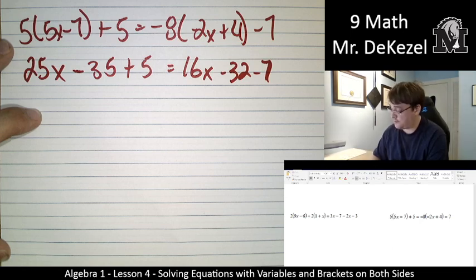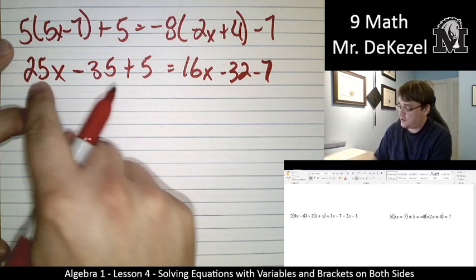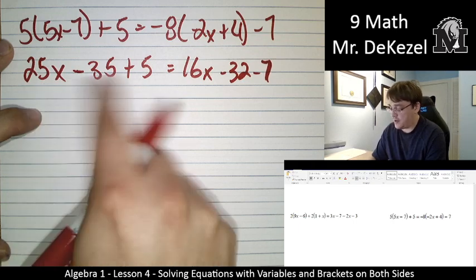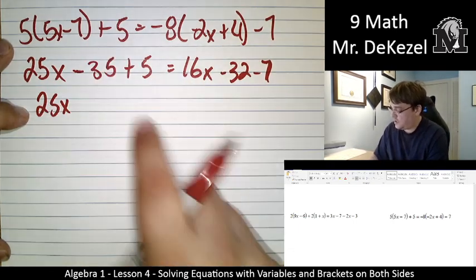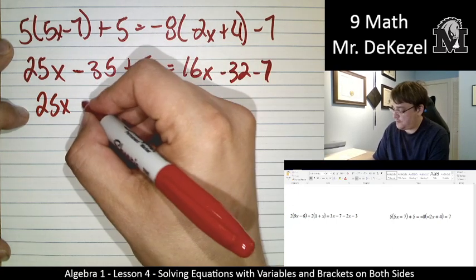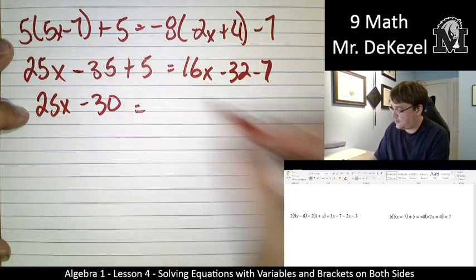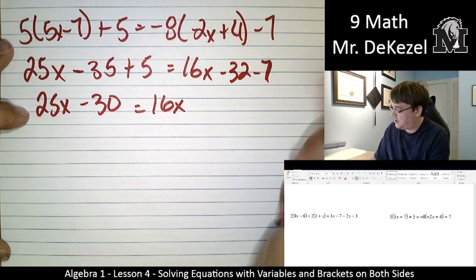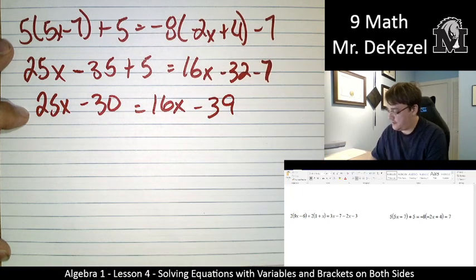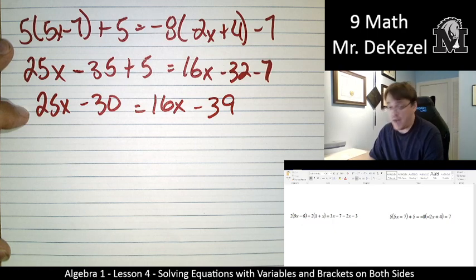So let's combine like terms on both sides. 25 doesn't combine with anything on this side, so it's just 25x. Minus 35 plus 5, that's minus 30, is equal to 16x stays with it on that side, and we have minus 39 on that side.